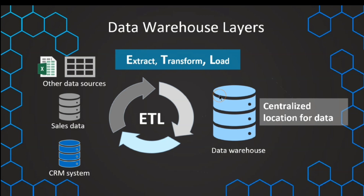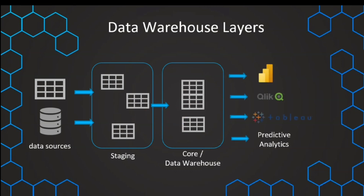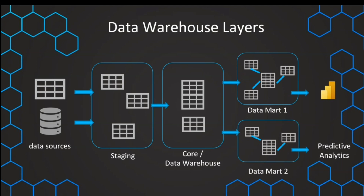There are different layers in our data warehouse. From the data sources, we first extract the data into our staging layer — this is where we have all of the data in tables and have done some minor cleaning. Then during the load from staging to the core, we are transforming the data; this is basically where our dimensional modeling takes place. From there, we can use the data with all different applications, and it makes sense to have one data mart for one specific use case, tailoring it more specifically to improve its value.